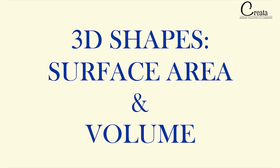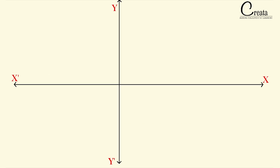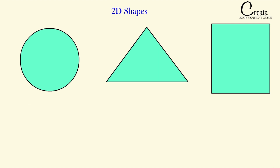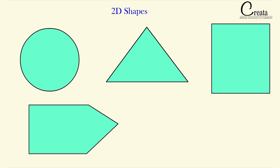Till now we have been dealing with 2D objects — objects that can be drawn in a plane, like your notebook or a board. The examples of 2D figures we have covered are circles, triangles, rectangles, polygons, etc. So till now we have covered the 2D shapes; now we will cover the 3D shapes, that is, 3D objects.